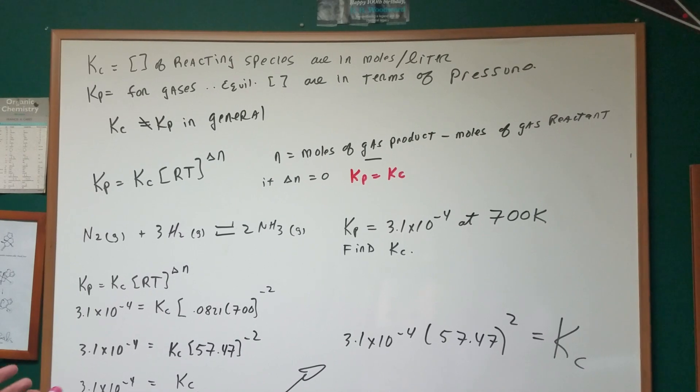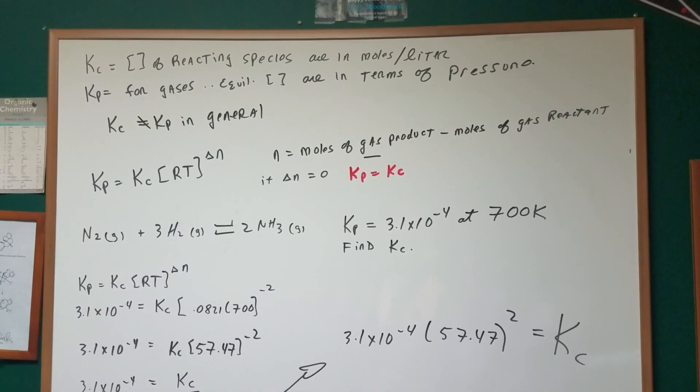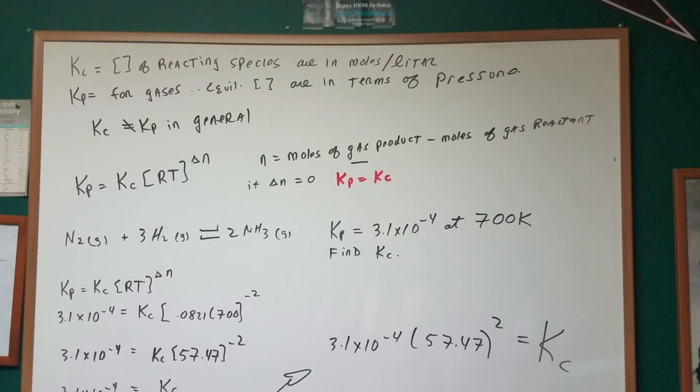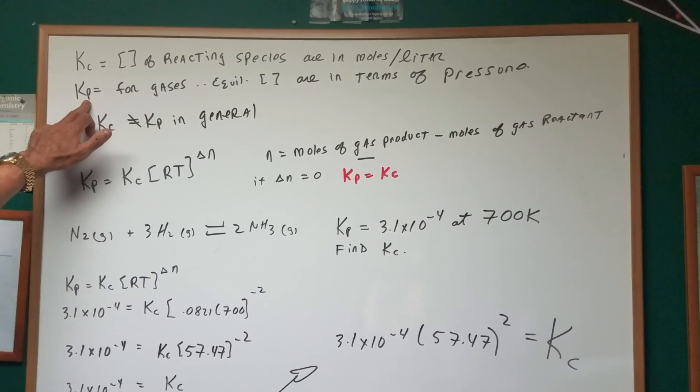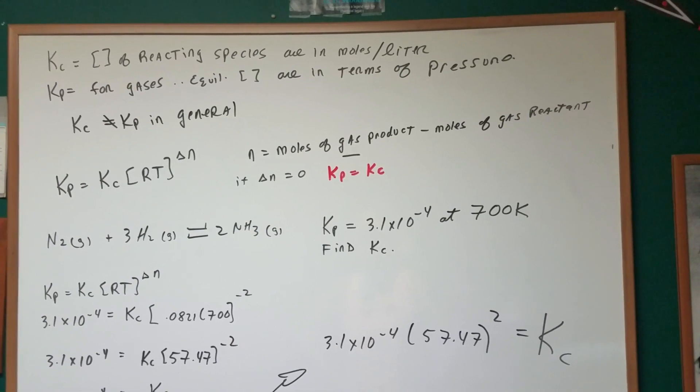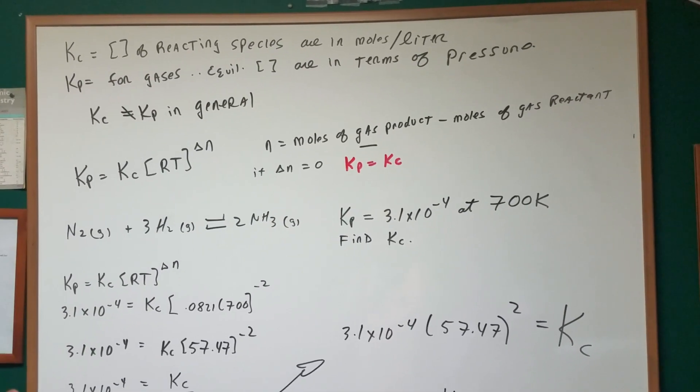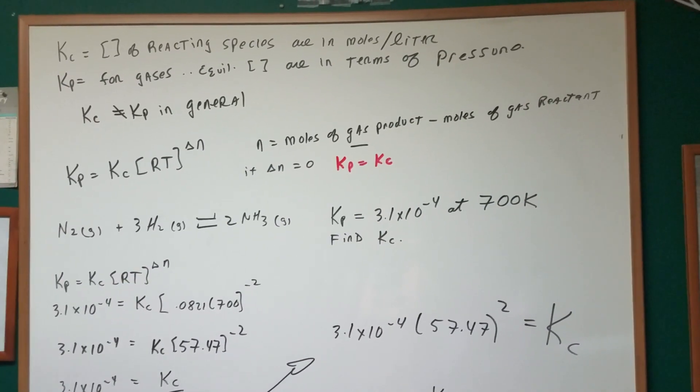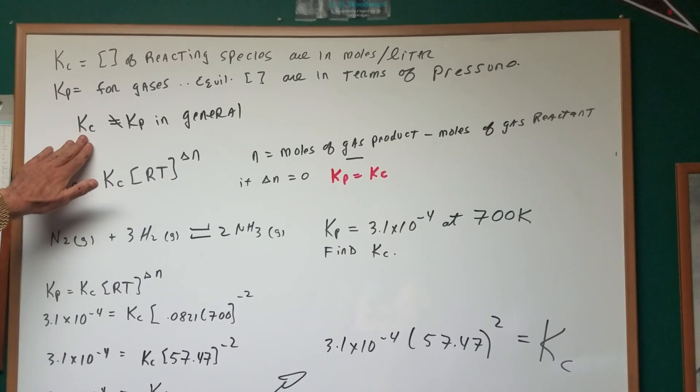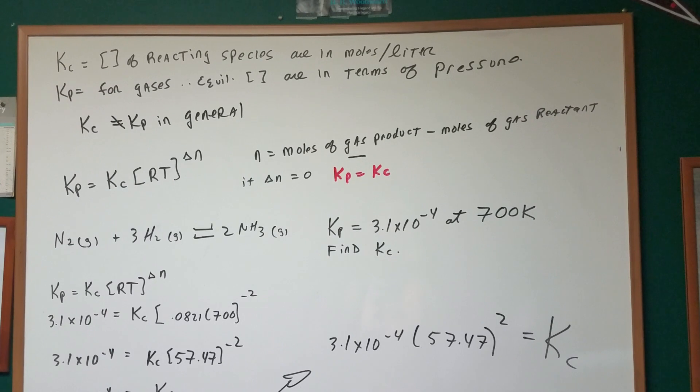If we're dealing with gases, however, the equilibrium concentration is expressed often in terms of pressure, and therefore we call it the KP. The K value in either case will give you an idea of the extent of the direction of the equilibrium. In general, the KP does not equal the KC.